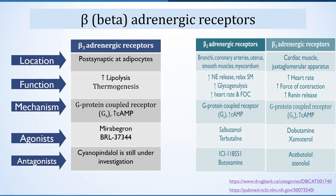Beta-3 adrenergic receptors are present postsynaptically at adipocytes, where they increase lipolysis and cause thermogenesis. They also belong to the G-protein coupled receptor family and increase cyclic AMP concentration. The agonist Mirabegron is used as an anti-obesity agent. The antagonist cyanopindolol is still under investigation; some research suggests it is not a true beta-3 antagonist but rather a partial agonist of beta-1 and beta-2 adrenergic receptors. For more information on agonists and antagonists, please visit the listed references.